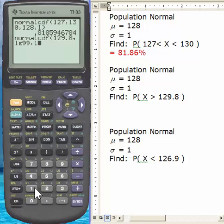Then I put in the mean of 128, then a comma, and then the standard deviation, which is 1 in this case. Right parenthesis, hit enter. And there we have our answer.